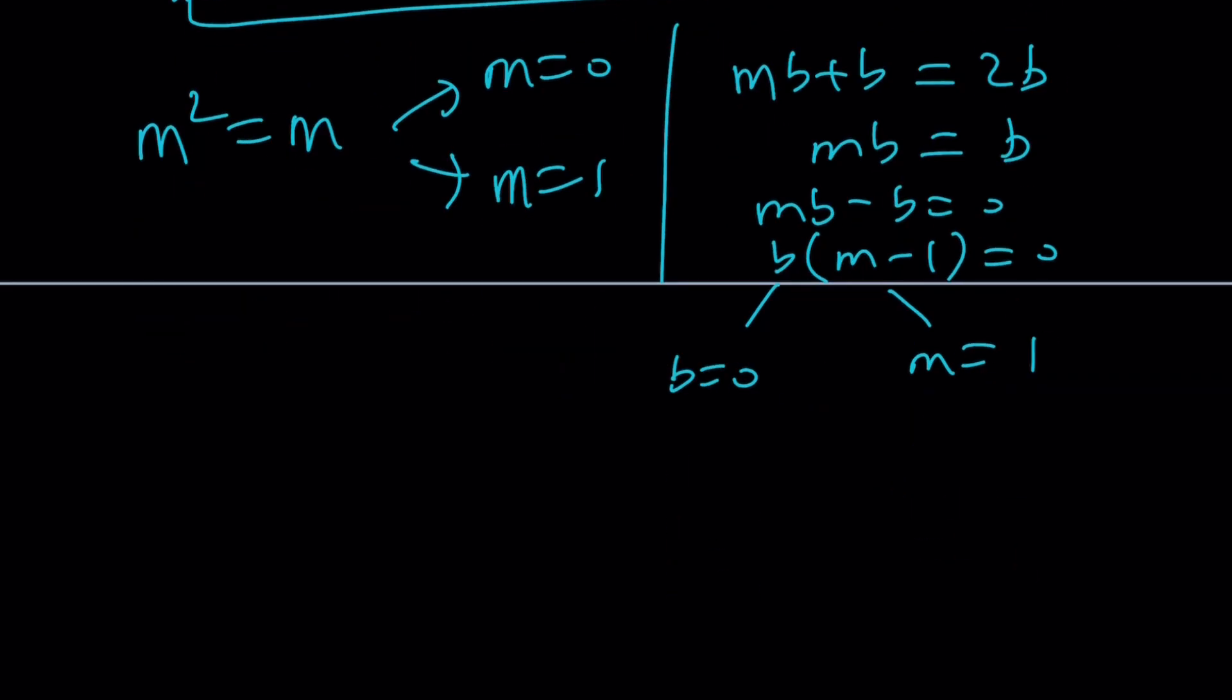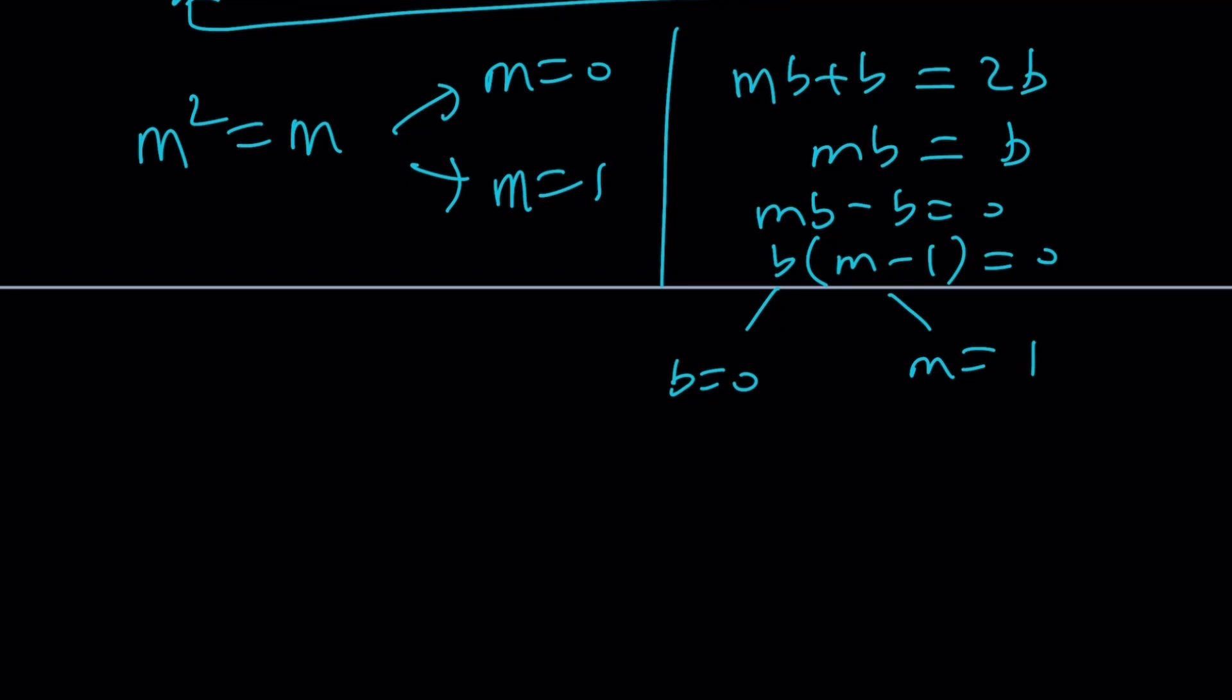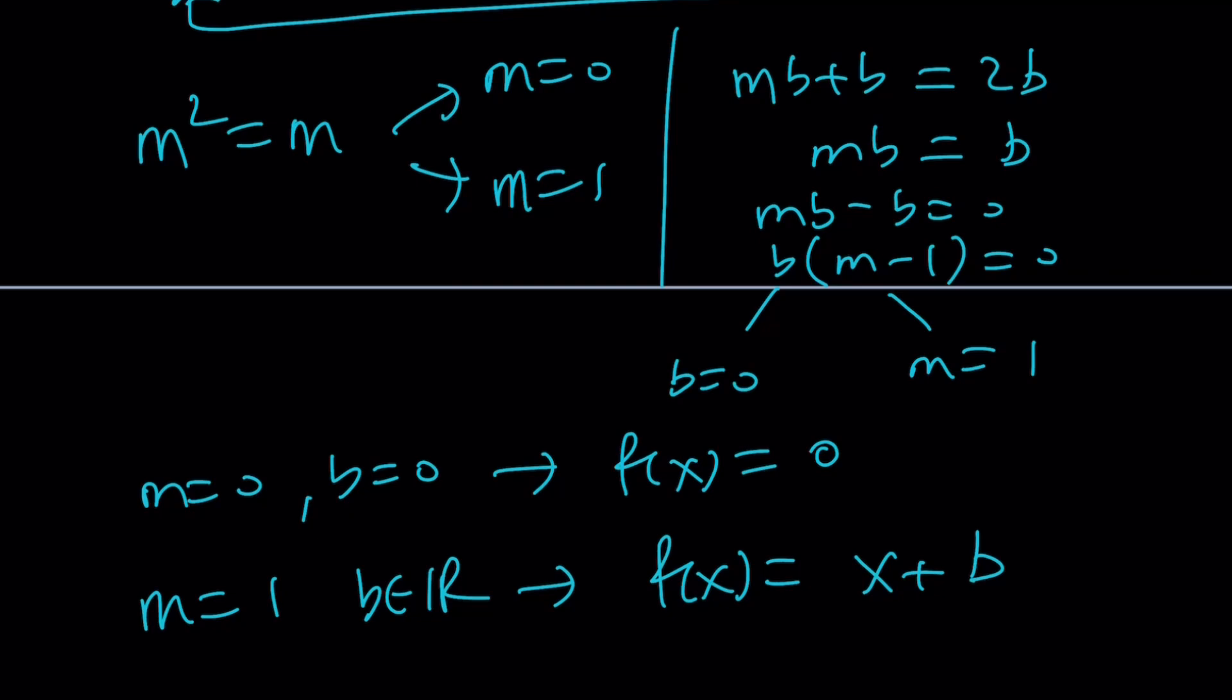Now take a look. If b is equal to 0, m doesn't have to be 1, in which case m can be 0. So m equals 0 and b equals 0 should work. That gives us f(x) equals 0, the constant 0 function. Or, if m is equal to 1, then b can be anything. b is a real number, in which case f(x) can be written as x plus b. As we talked about it before with the t method, we got the same thing.